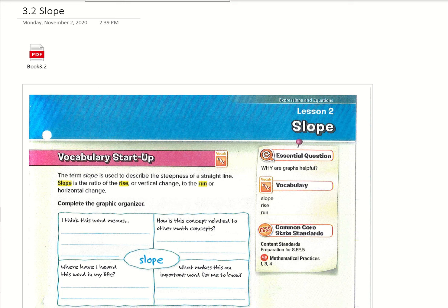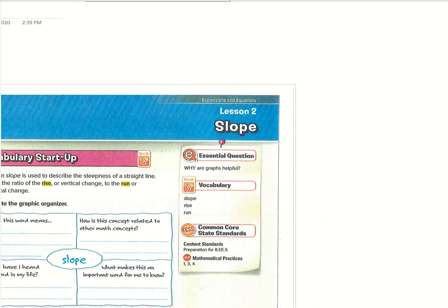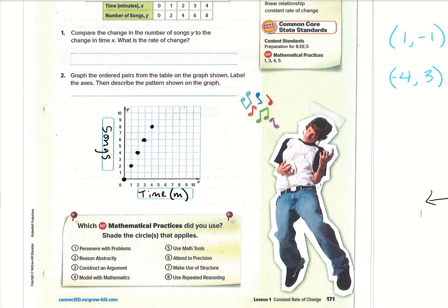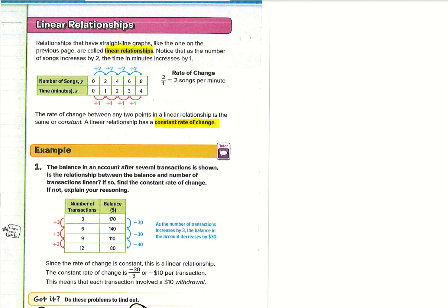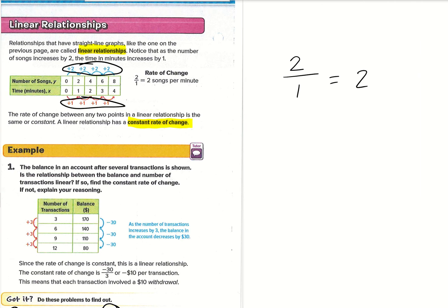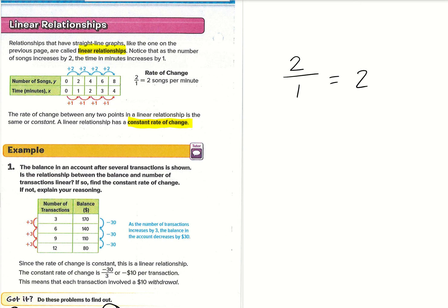Slope and rate of change are extremely similar. The reason is that when you do rate of change — so you did in 3.1 — when you looked at the table, you have plus 2, so positive 2, and then you put it over that positive 1. Your rate of change was 2, or 2 songs per minute on that example. So that's what rate of change is — slope is extremely similar, because that one was 2 over 1, where 2 is the y and 1 was the x.